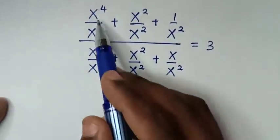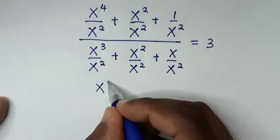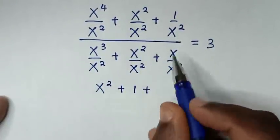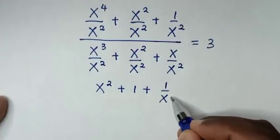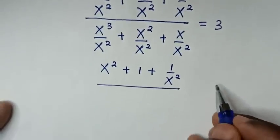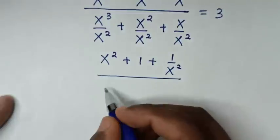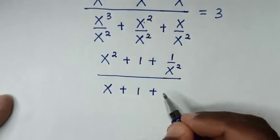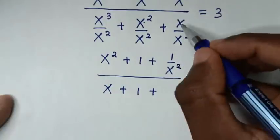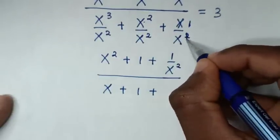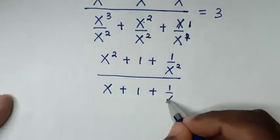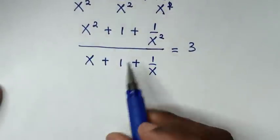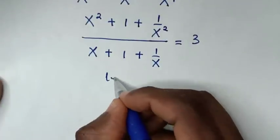In the next step we simplify: x⁴ divided by x² is x², plus x²/x² is 1, plus 1/x², over x³/x² which is x, plus x²/x² which is 1, plus x/x².